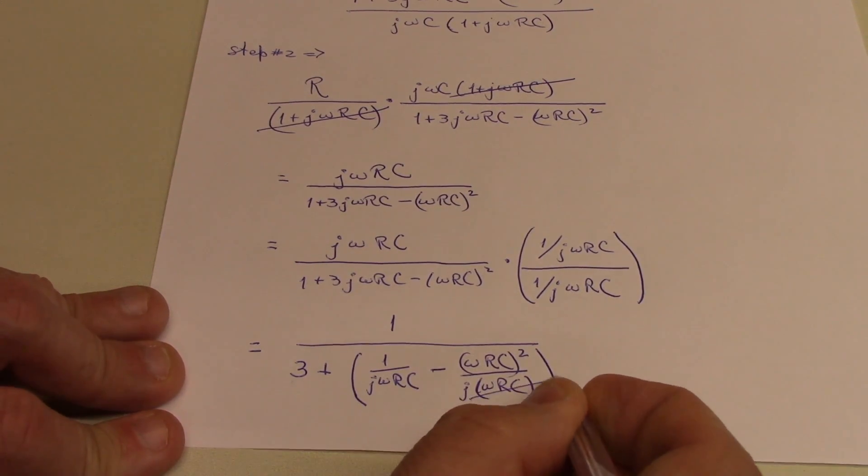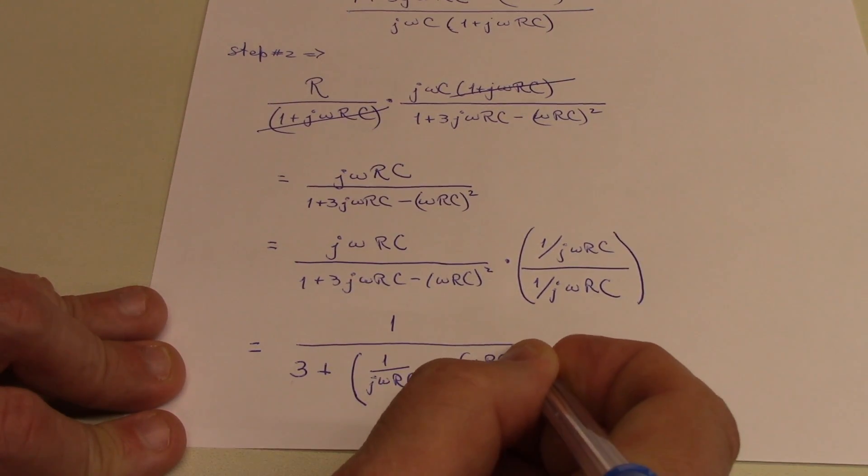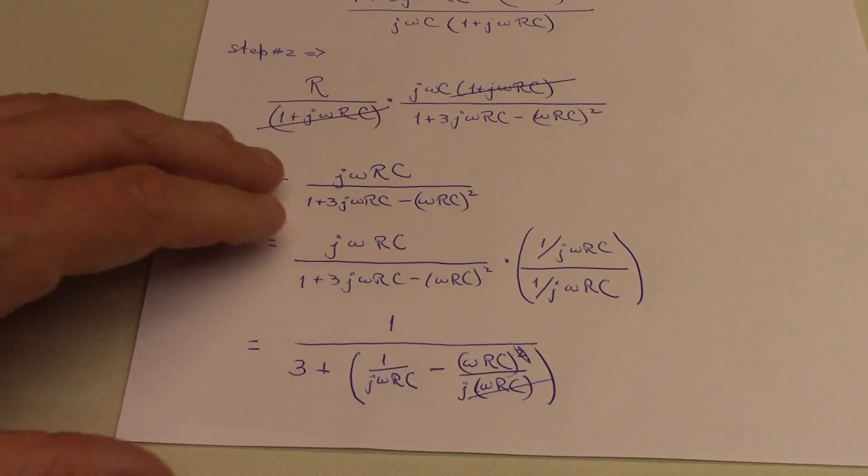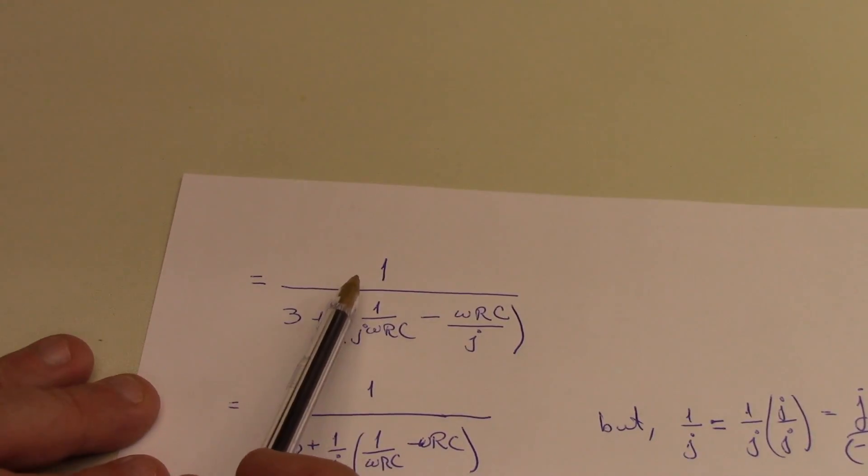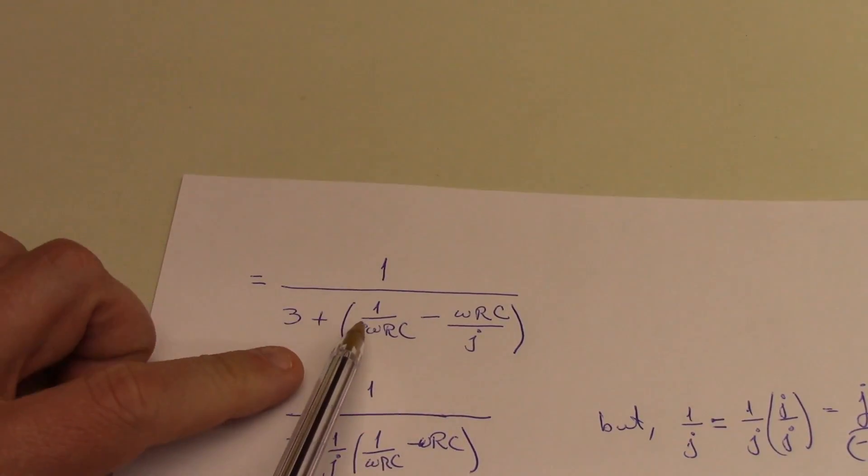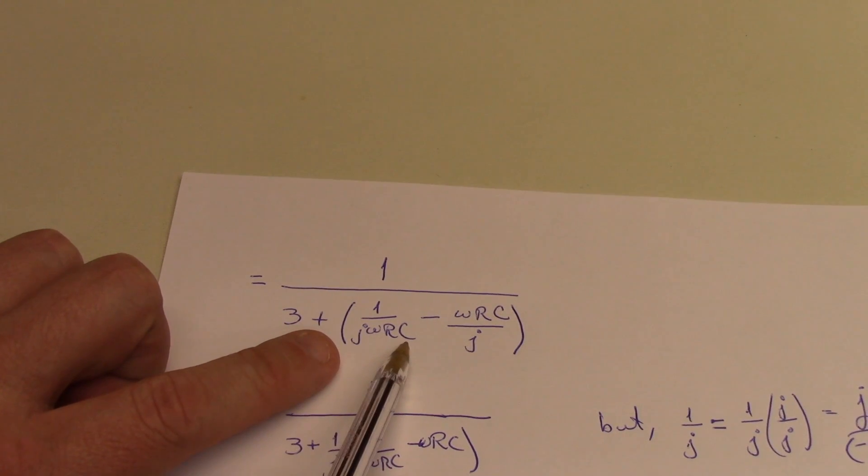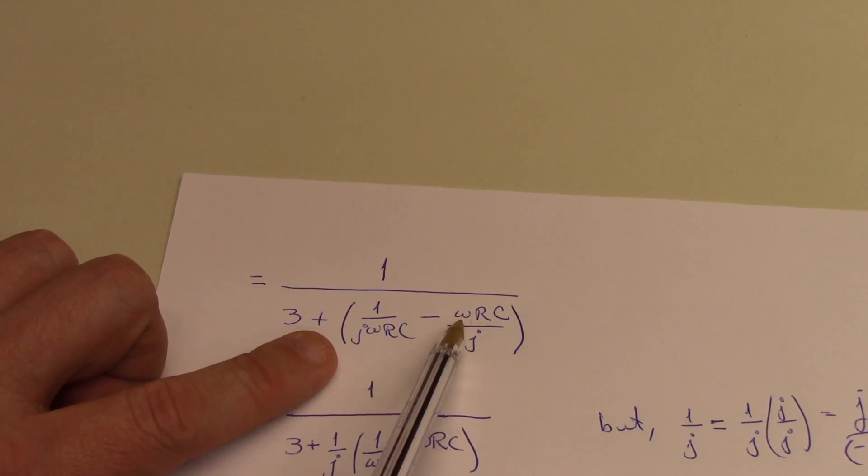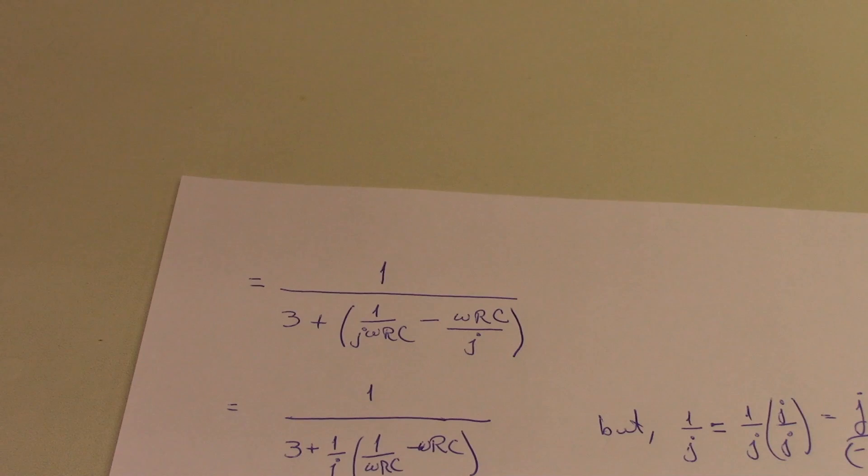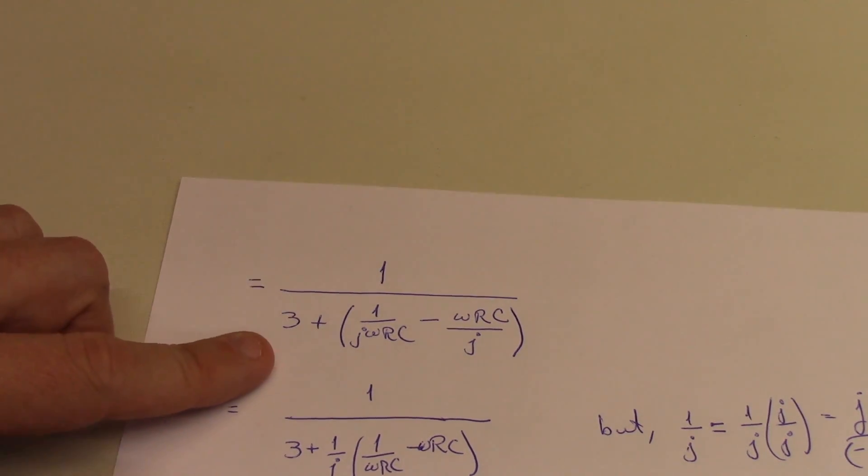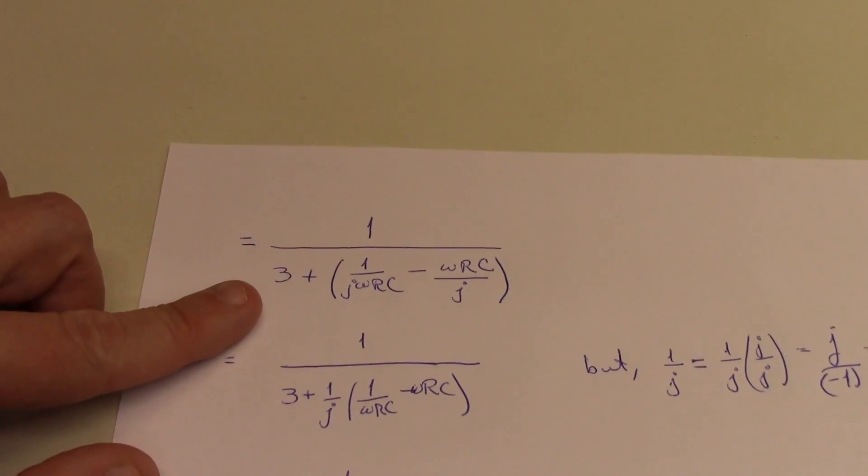But again, I think you can see that 1 factor of omega rc is going to go. So this 2 up there becomes a 1. And I'm now left with this expression is 1 over 3 plus 1 over j omega rc minus omega rc over j. And this should be looking a lot closer to the expression we're trying to derive.